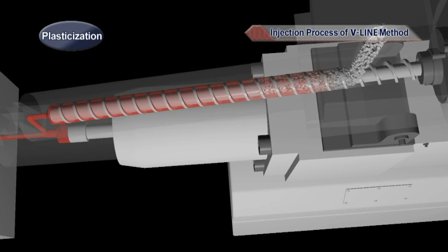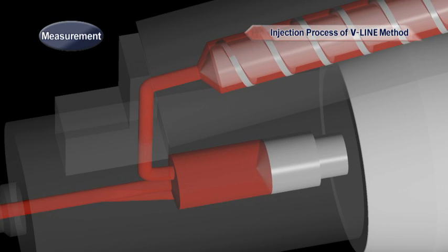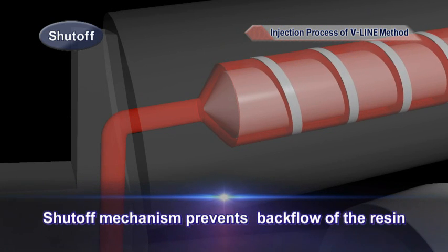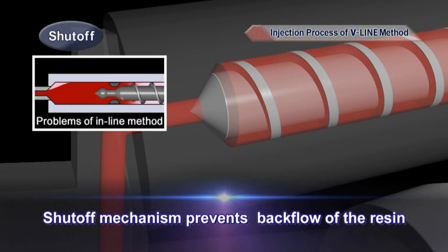The screw rotates again to supply resin into the injection cylinder. After the measurement, the screw moves forward to shut off the fluid path. In the V-line method, the adoption of such a screw-touch method shutoff mechanism completely prevents the backflow of resin, which is regarded as a problem in the in-line method.